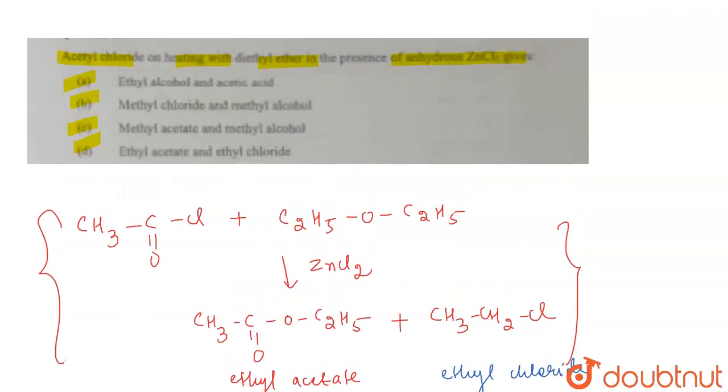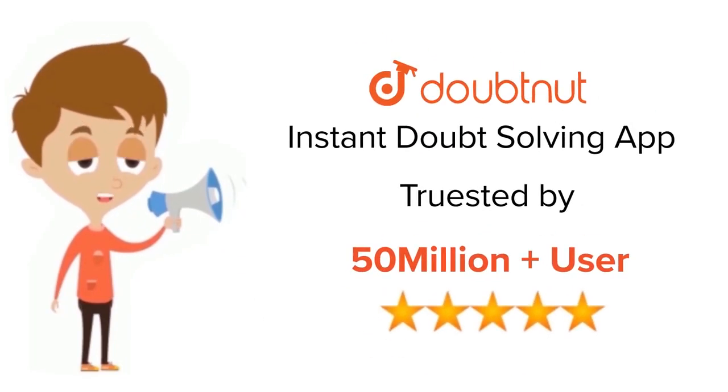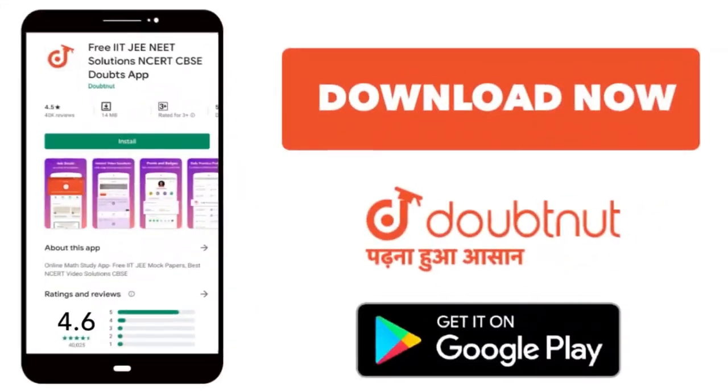This is given to you in the fourth option. The fourth option is correct, so the answer for this question is option D. That's all for the question. For class 6 to 12, IIT-JEE and NEET level, trusted by more than 5 crore students, download Doubtnet today.